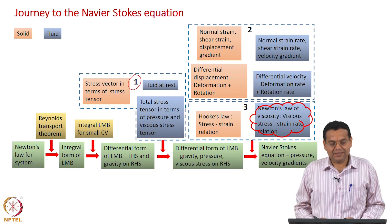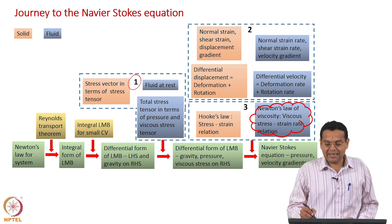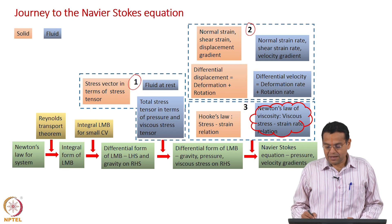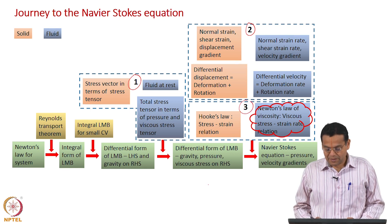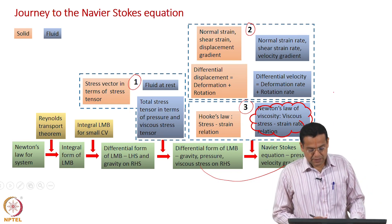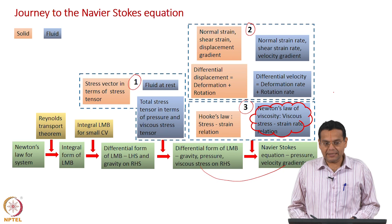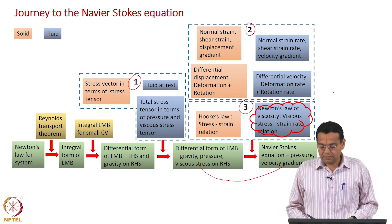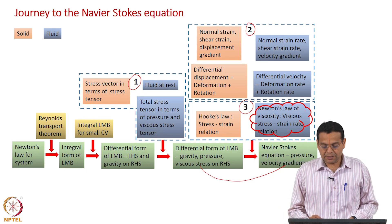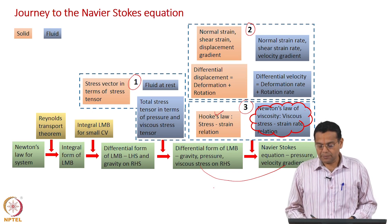The first time we went to solids to understand forces and stress; the second time to understand strain; and we are now visiting a third time. The whole objective was to relate the viscous stress to the velocity gradients, or the strain rate, which is Newton's law of viscosity. We went to solid mechanics to understand Hooke's law and have now come back to fluid mechanics to write down Newton's law of viscosity.